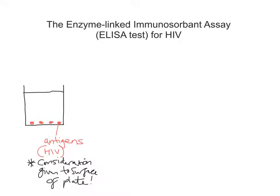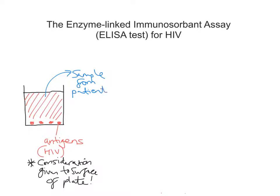Now what we do is pour in a sample of blood from a patient. What we're going to fill this well or plate with is a sample from a patient that we suspect as being HIV positive, or that we're ultimately trying to find out whether they are HIV positive. We're looking to see if we have any antibodies against HIV — those that we're actually testing for.